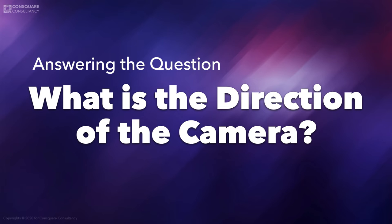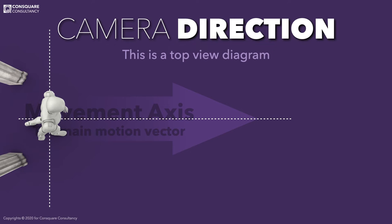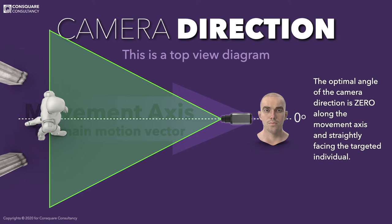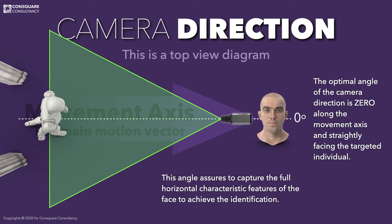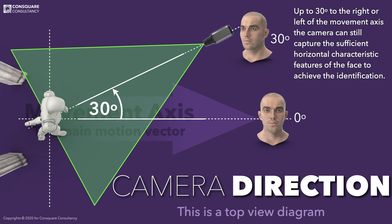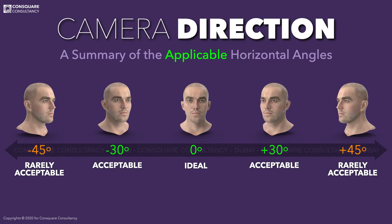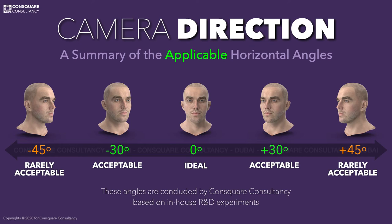What is the direction of the camera? This is a top-view diagram studying the case from above. The optimal angle of the camera direction is zero degrees — along the movement axis and straightly facing the targeted individual. This angle assures the capture of full horizontal characteristic features of the face to achieve identification. Up to 30 degrees to the right or left of the movement axis, the camera can still capture sufficient horizontal facial characteristics. These angles are concluded by Consquare Consultancy based on in-house R&D experiments.